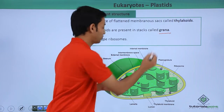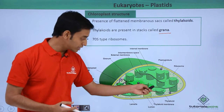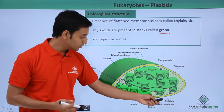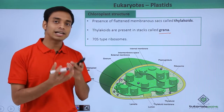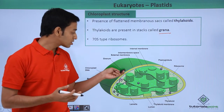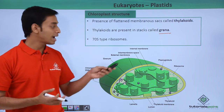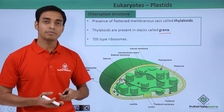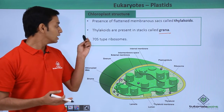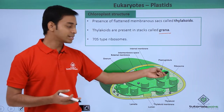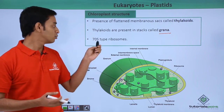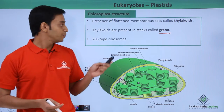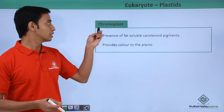Each single disc-shaped structure is a thylakoid, and these thylakoids are stacked in the form of a granum. All these grana together make up the grana. The ribosomes present in chloroplasts are mostly of the 70S type.